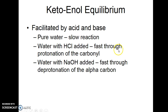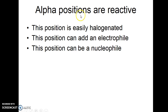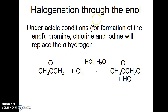With acid, you protonate the carbonyl and the enol forms. With sodium hydroxide, you first deprotonate the alpha carbon and then proton transfer occurs. Alpha positions are reactive because you can easily halogenate the enol formed — the alpha carbon is nucleophilic and can add an electrophile. The enol acts as a nucleophile and does electrophilic addition of chlorine or bromine across the double bond.